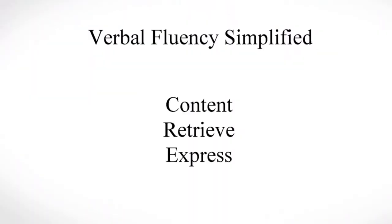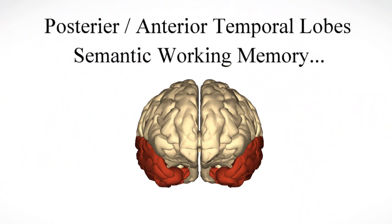Today we're talking about semantic verbal fluency. Verbal fluency simplified is having content in your head and the ability to retrieve that content and express it verbally. If you purchased my verbal fluency workshop, then you're an expert. Semantic fluency specifically targets the anterior temporal lobes, which is critical for semantic working memory of our knowledge — objects, people, words, and facts.